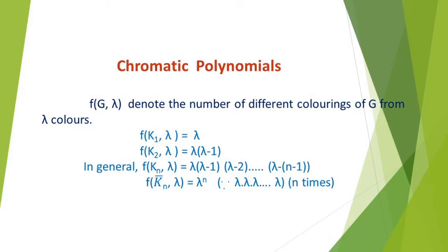Next we see the totally disconnected graph with n vertices, usually denoted as Kn-bar. The value for f(Kn-bar, lambda) is lambda^n. In Kn, we can't reuse previously assigned colors because all vertices are adjacent. But in Kn-bar, all vertices are totally disconnected, so for each vertex we can assign lambda colors. Since all n vertices have lambda possibilities, we multiply lambda n times, giving lambda^n.